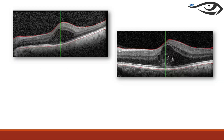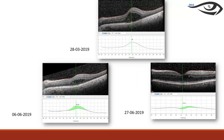Macular change analysis programs compare OCT visits over time. For example, comparing a first visit with a second visit shows how much edema has increased. After an anti-VEGF injection, green on the map indicates a reduction in edema and red indicates an increase. This is a very useful feature to monitor how the patient is responding to treatment across multiple injections.